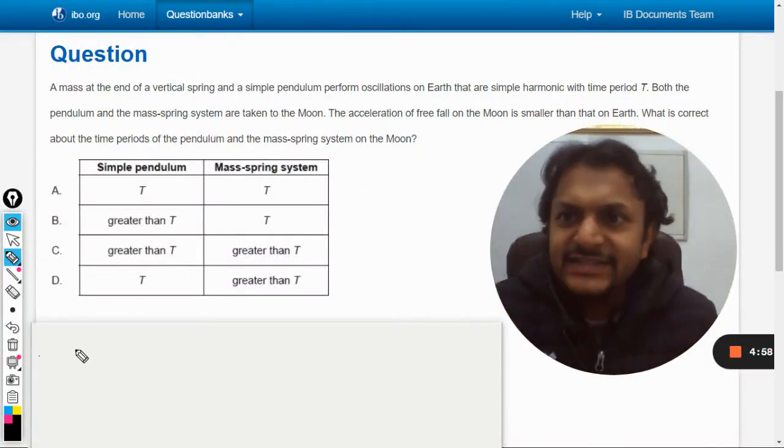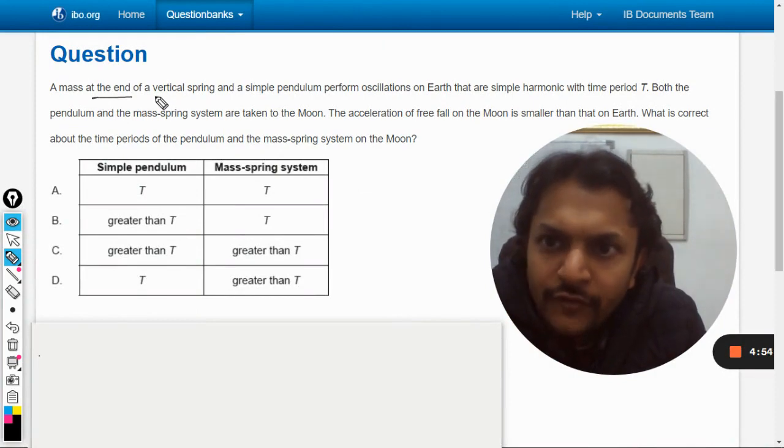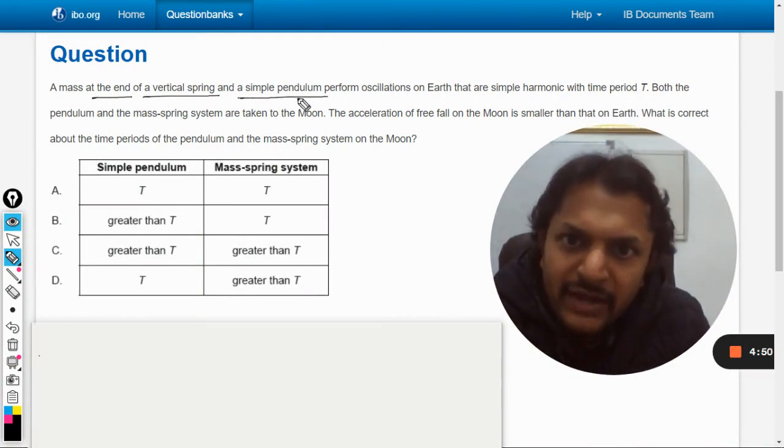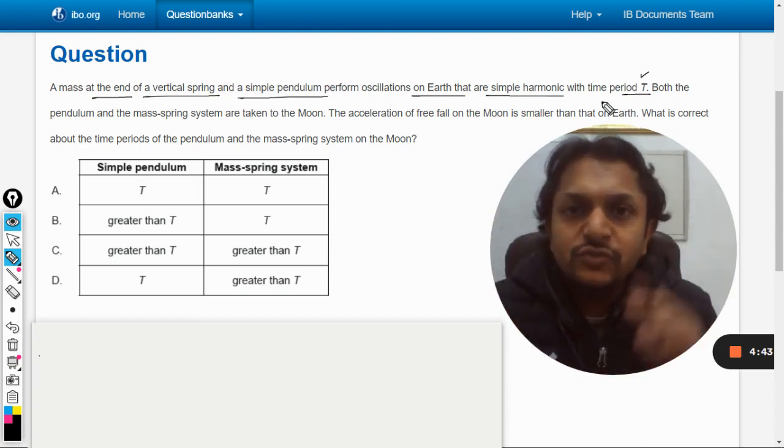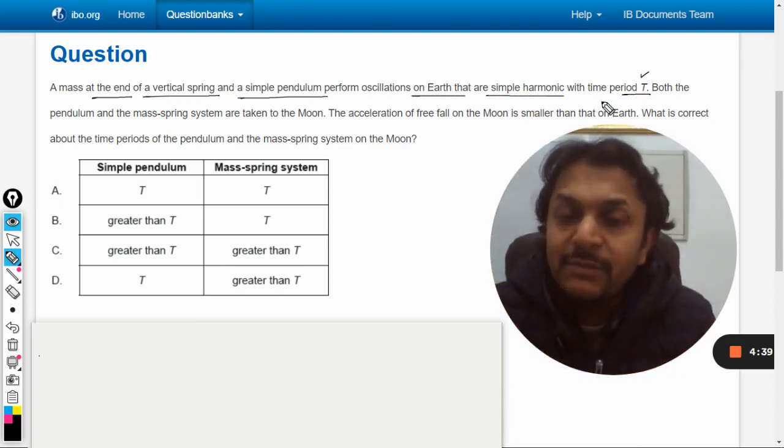Okay dear students, let us see how we're going to do this question. A mass at the end of a vertical spring and a simple pendulum perform oscillations on Earth that are simple harmonic with time period T. So we're considering two different motions: one is a pendulum motion, another is a spring-mass system. Both are working on Earth and both have time period capital T.